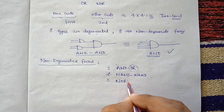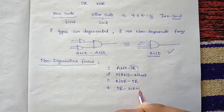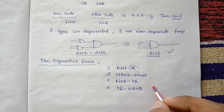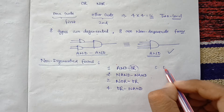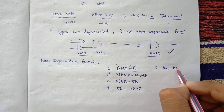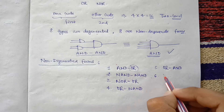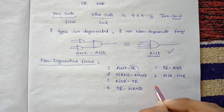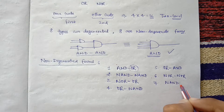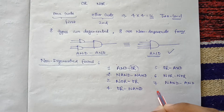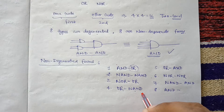The third non-degenerated form is NOR-OR, and the fourth is OR-NAND. The other four types are duals of these four. So the fifth will be the dual of AND-OR, giving OR-AND. The sixth will be NOR-NOR. The seventh will be NAND-AND. And the eighth, the dual of OR-NAND, converts OR to AND and NAND to NOR, giving AND-NOR.